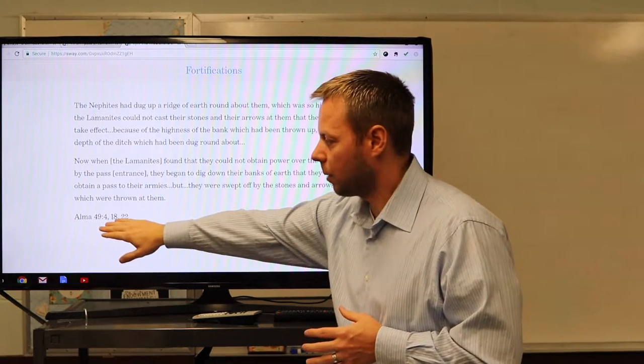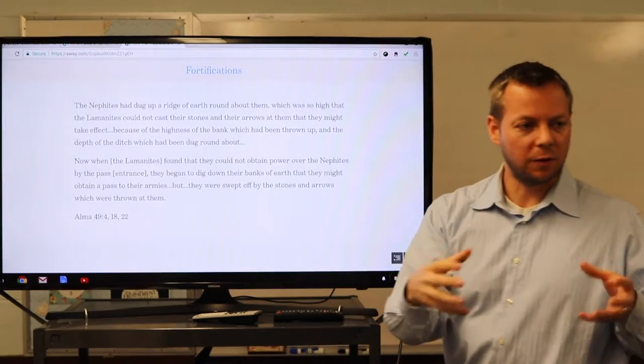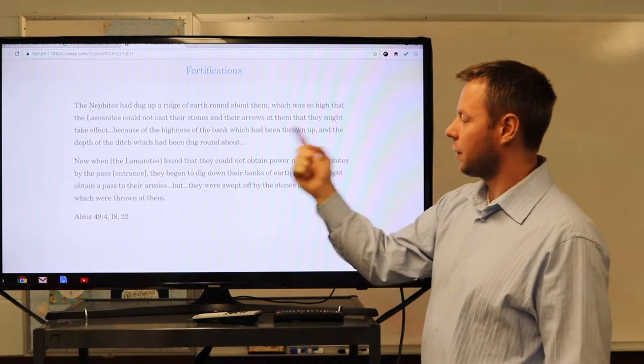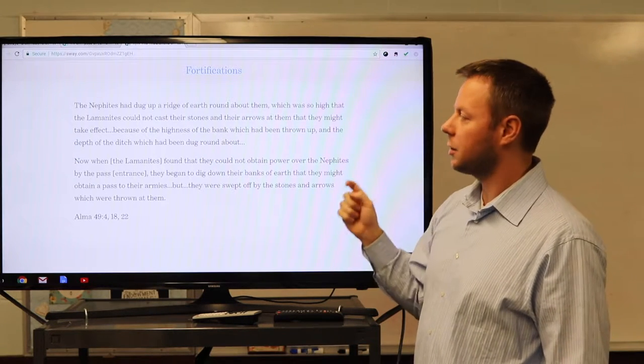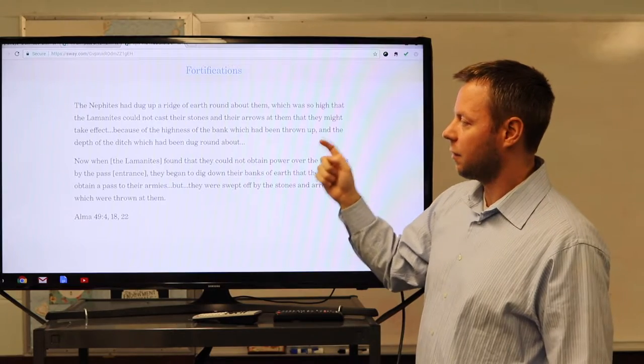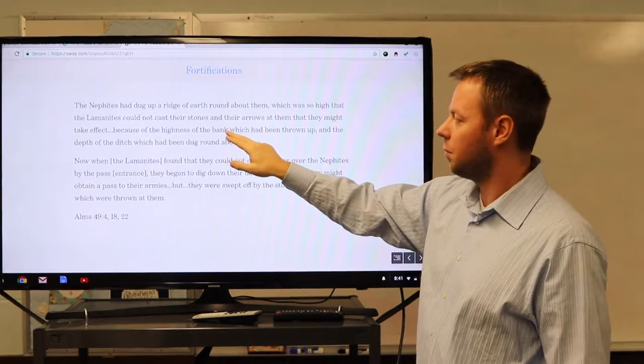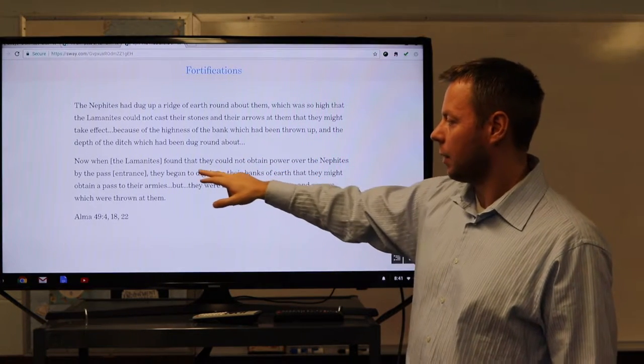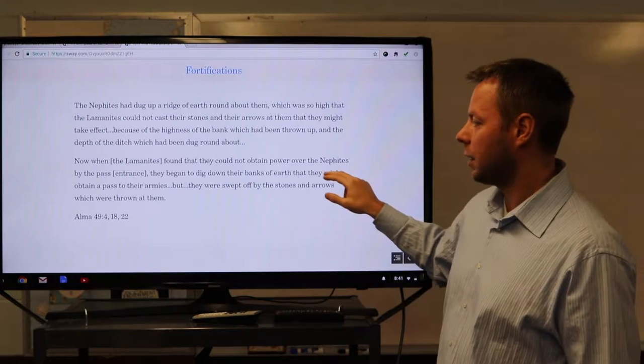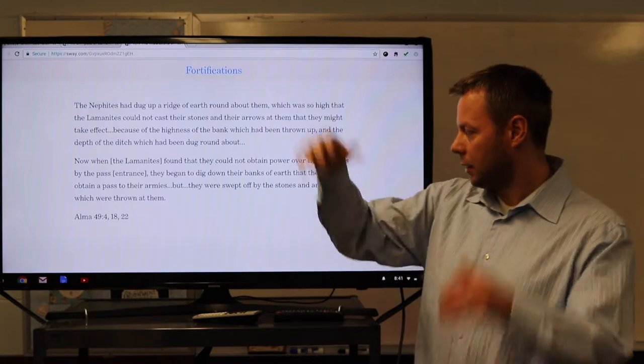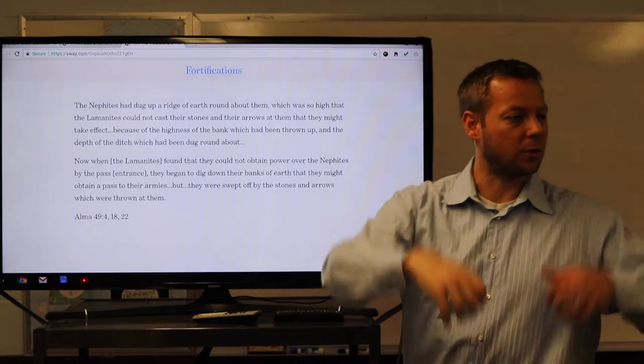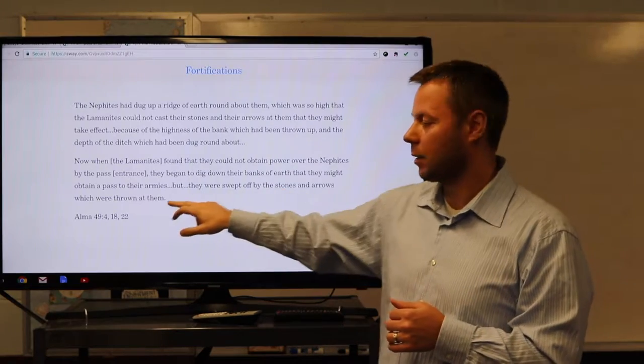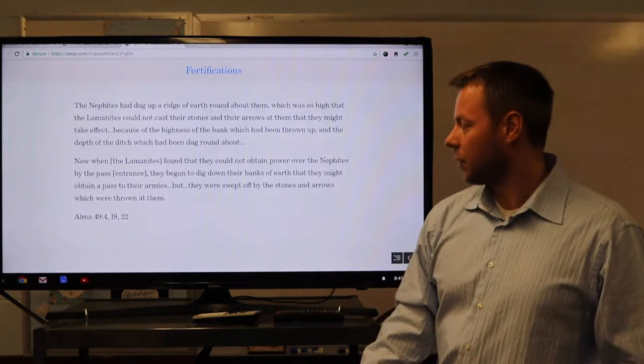Now let's get more specific. We're going to read a couple of descriptions of very specific fortifications that we get. The Nephites had dug up a ridge of earth round about them, which was so high that the Lamanites could not cast their stones and their arrows at them that they might take effect, because of the highness of the bank which had been thrown up and the depth of the ditch which had been dug round about. And when the Lamanites found they could not obtain power over the Nephites by the pass or the entrance, they began to try and dig down the banks of earth that they might obtain a pass or the enemies, right? So they're trying to dig down this big bank. But they were swept off by the stones and arrows. Here's the arrows, right? They were thrown at them, right? So they're taking them off this bank.